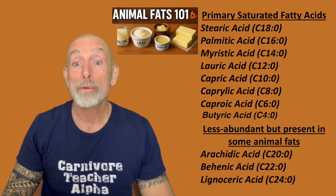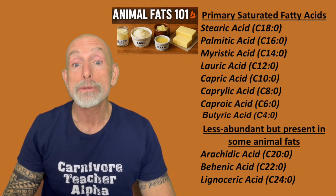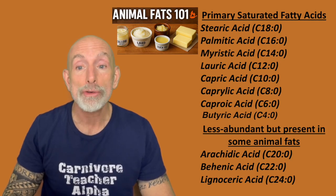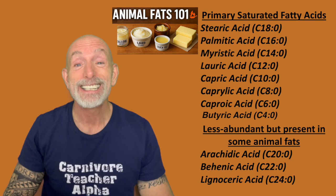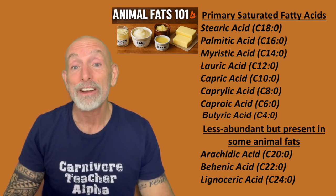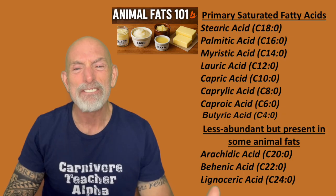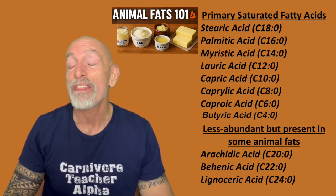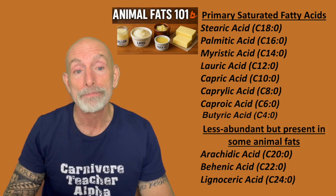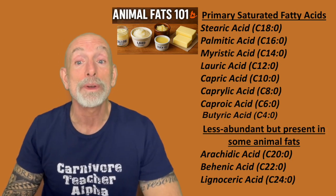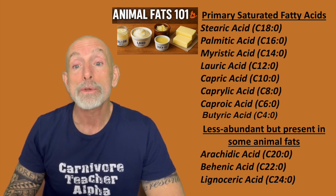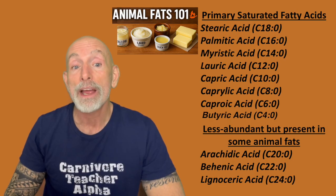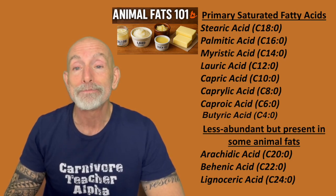Hey everybody, it's John here, your carnivore teacher Alpha. Today we're breaking down one of the most misunderstood parts of nutrition: saturated fat. No seed oils, not polyunsaturated industrial sludge. I'm talking about the real, natural animal fats — tallow, suet, butter fat, duck fat, lard, ghee, marrow fat. The fats that humans have eaten for thousands and thousands of years and thrived on. In this video, I'm going to teach you the actual names of the fatty acids inside these animals, what they do in the body, which animals contain which fats, and why they are not the villains we've been taught they are. Let's go.